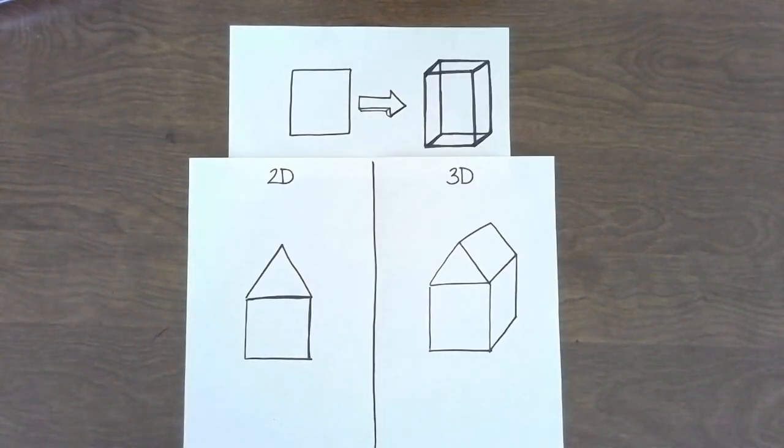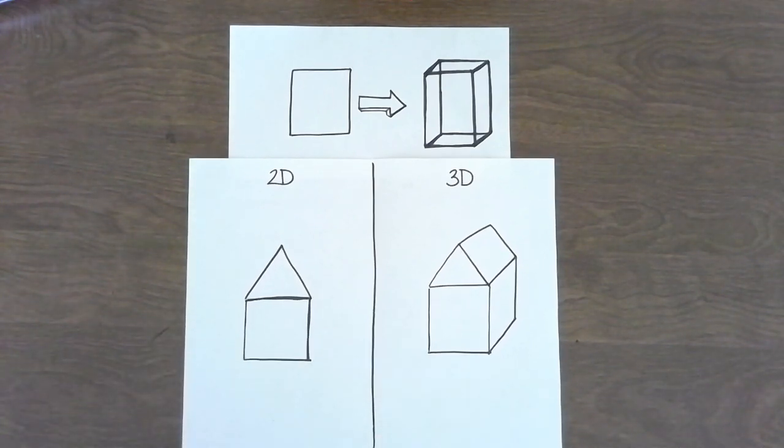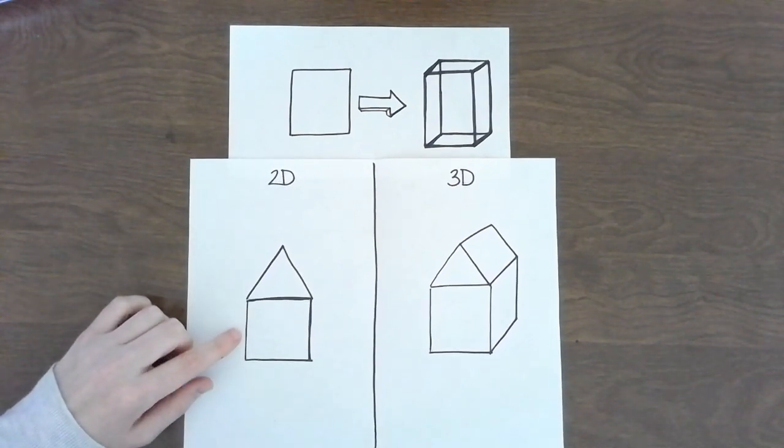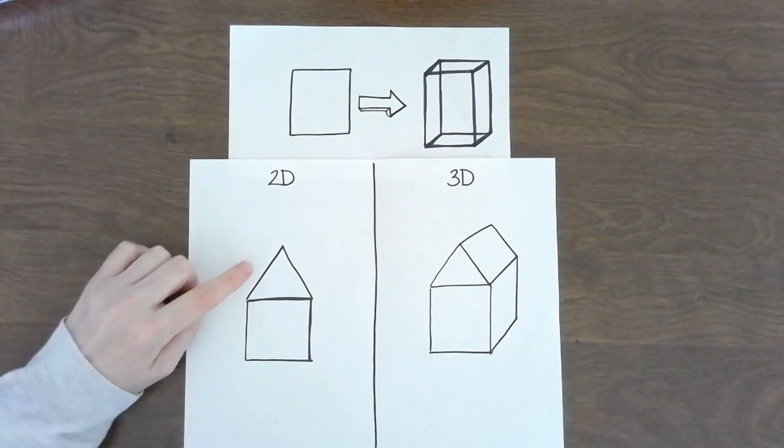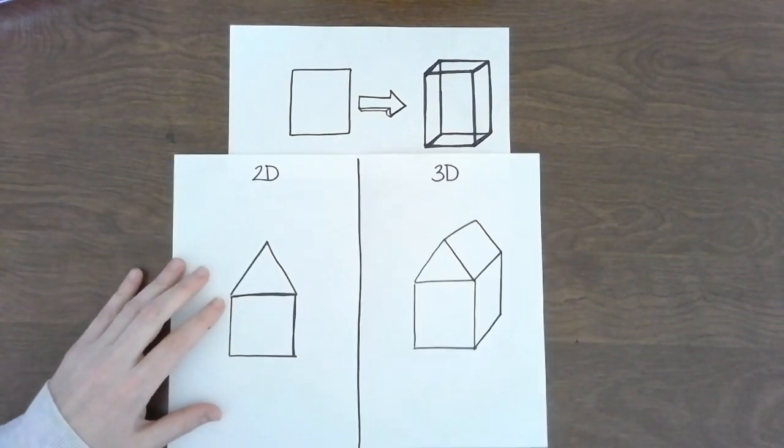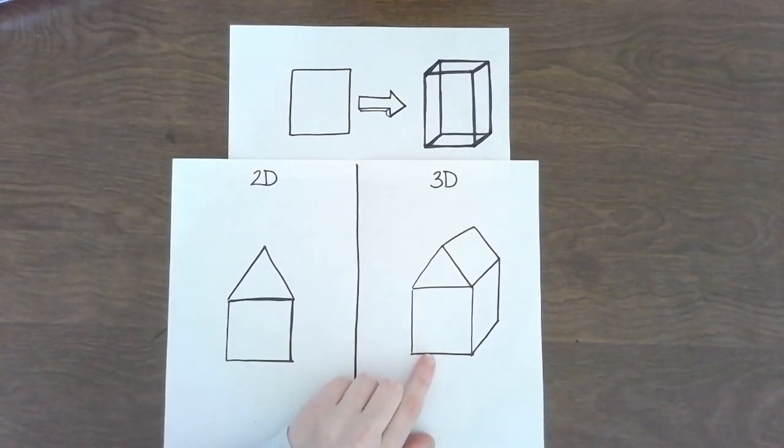It's pretty easy to take something that is 2D and turn it into something that is 3D in appearance. This is an example of a house. Typically when you draw a house you start with a square or rectangle and put a triangle on top for the roof and you could add your doors, your windows. But by adding a few extra lines you now have a house from a different perspective making it 3D.